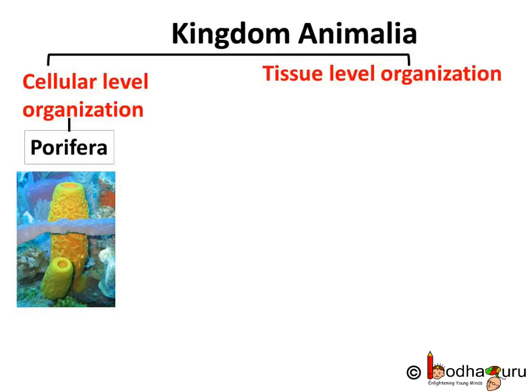The animal kingdom is divided into phyla based on very basic body design. First we see whether an animal has proper tissues or not. The animals in phylum Porifera have partially differentiated tissues and not true tissues. So we can say they have only cellular level organization.